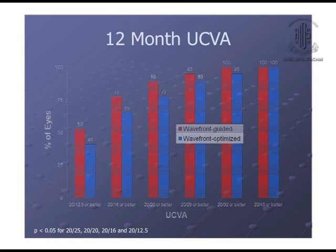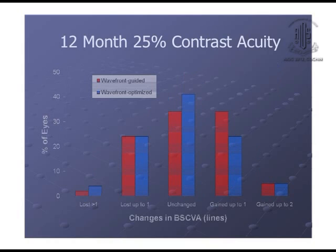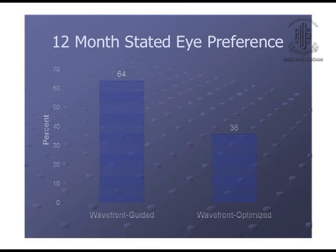More important than that, the quality of vision matters, and for assessing this, vision was examined at 25% contrast acuity. Here again, you can see there were more patients who gained lines and fewer patients who lost lines in the wavefront-guided group compared to the wavefront-optimized group. Very importantly, when all these patients were asked which eye they preferred — wavefront-guided or wavefront-optimized — 64% of patients pointed to the wavefront-guided eye, as against 36% who pointed to the wavefront-optimized eye.